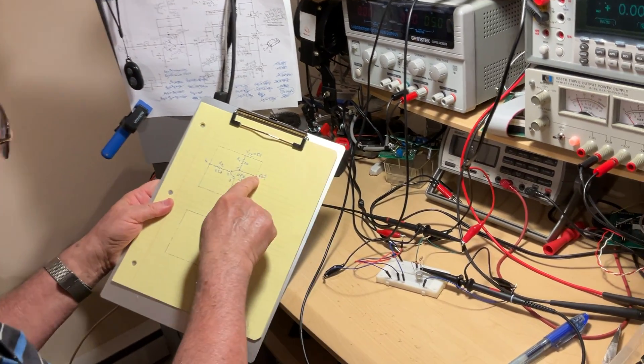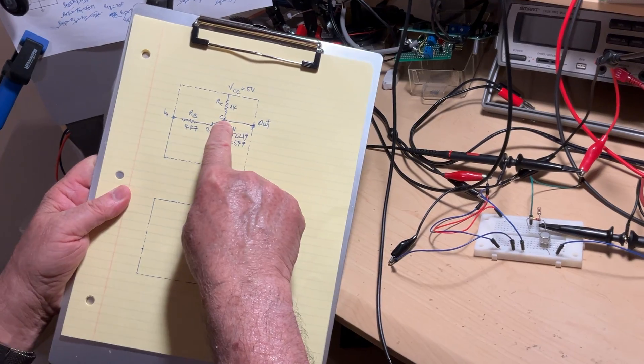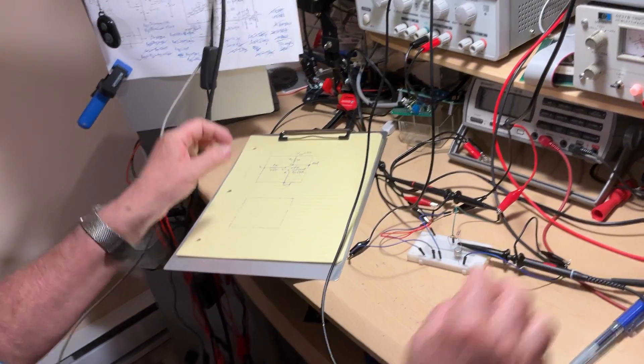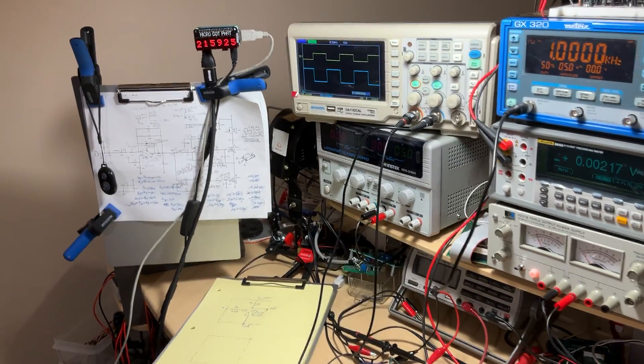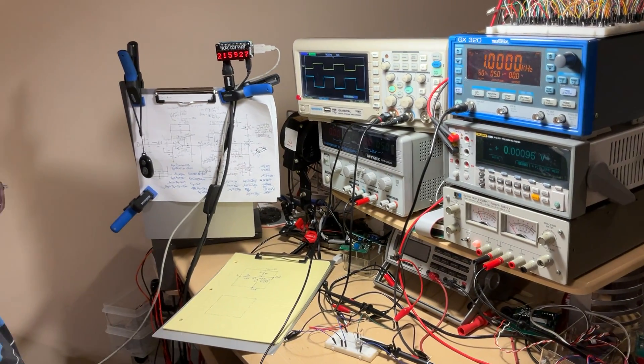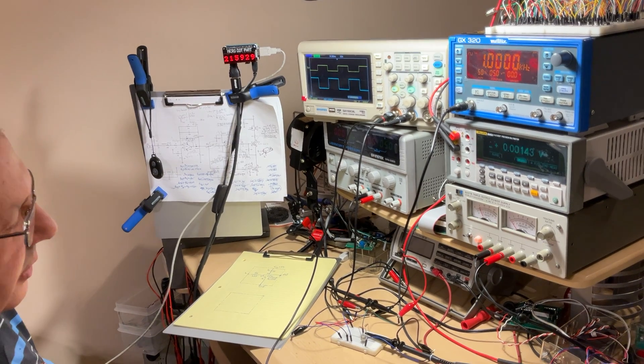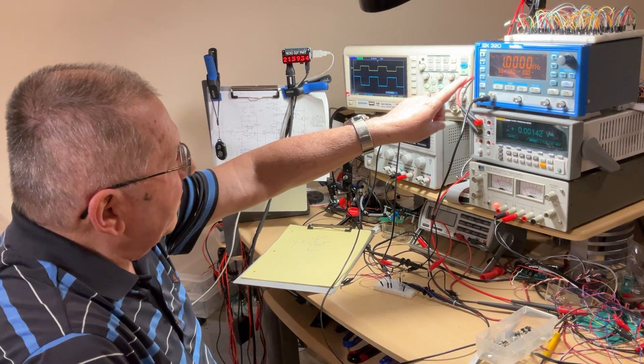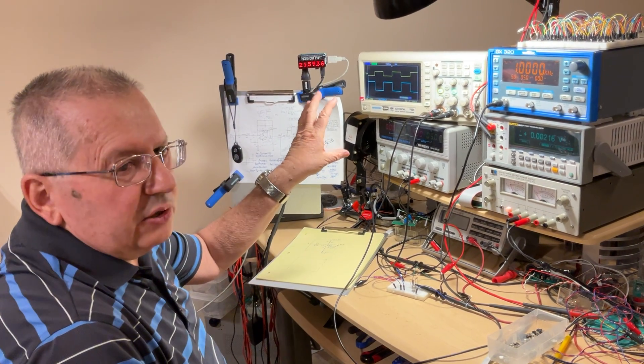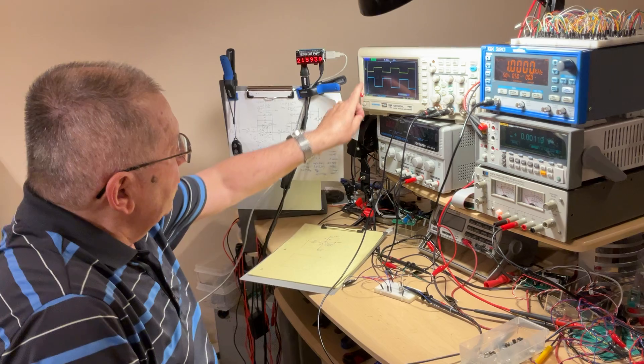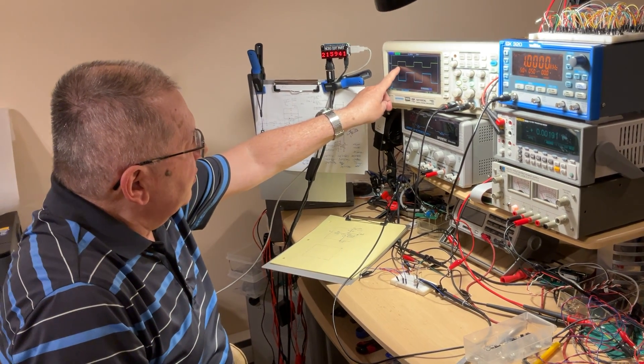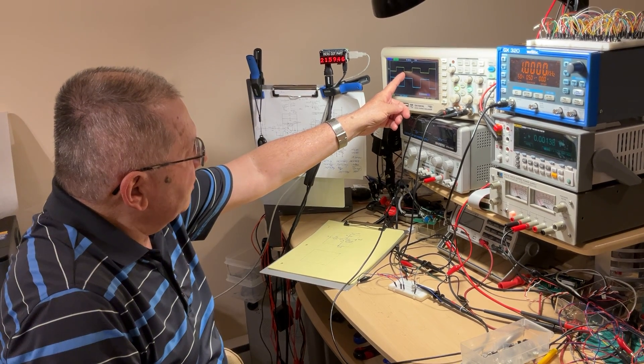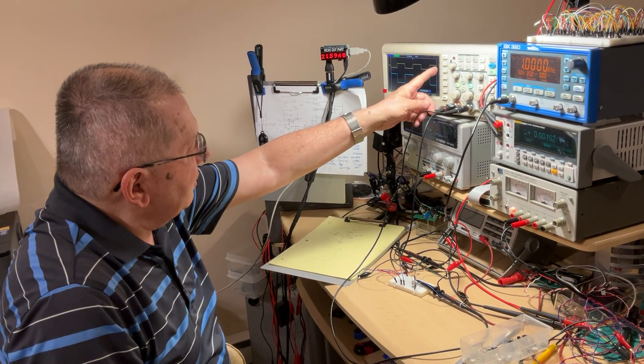Next, we're going to connect the second channel, so the second probe, right here to the output. The output being right here, between the collector of the transistor and the resistor of 1kΩ. I generated a square wave on purpose, because it's much easier to see exactly what happens. The signal of the input, when it goes up, stays up for a while, then goes back down, and it repeats that all over again.